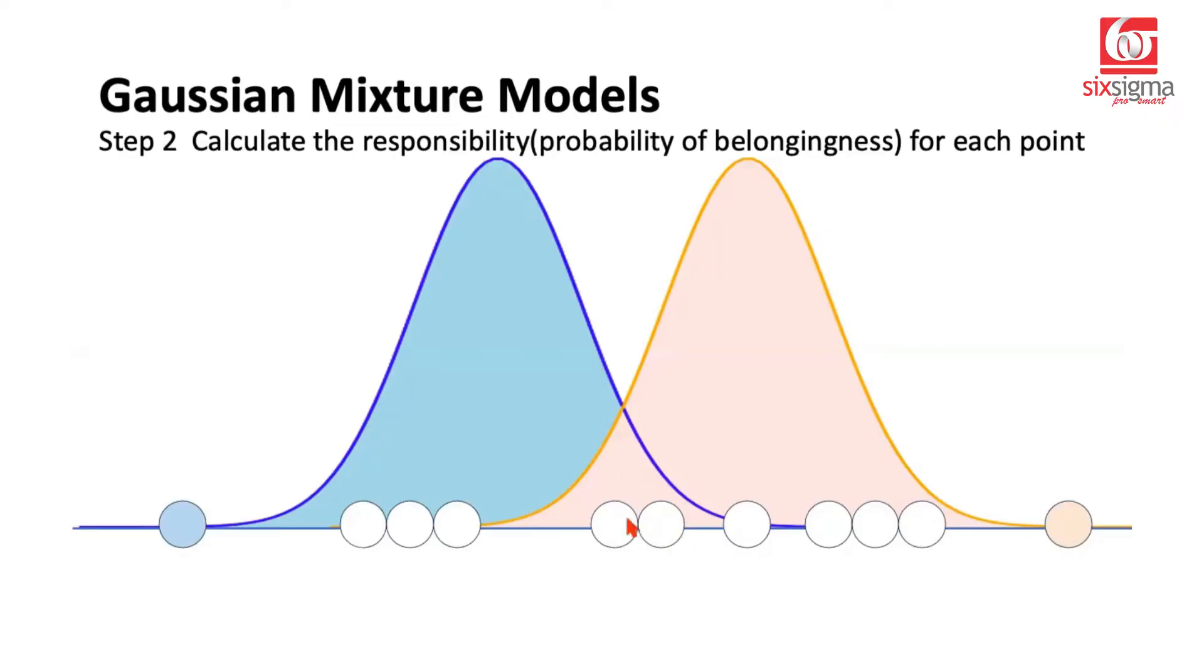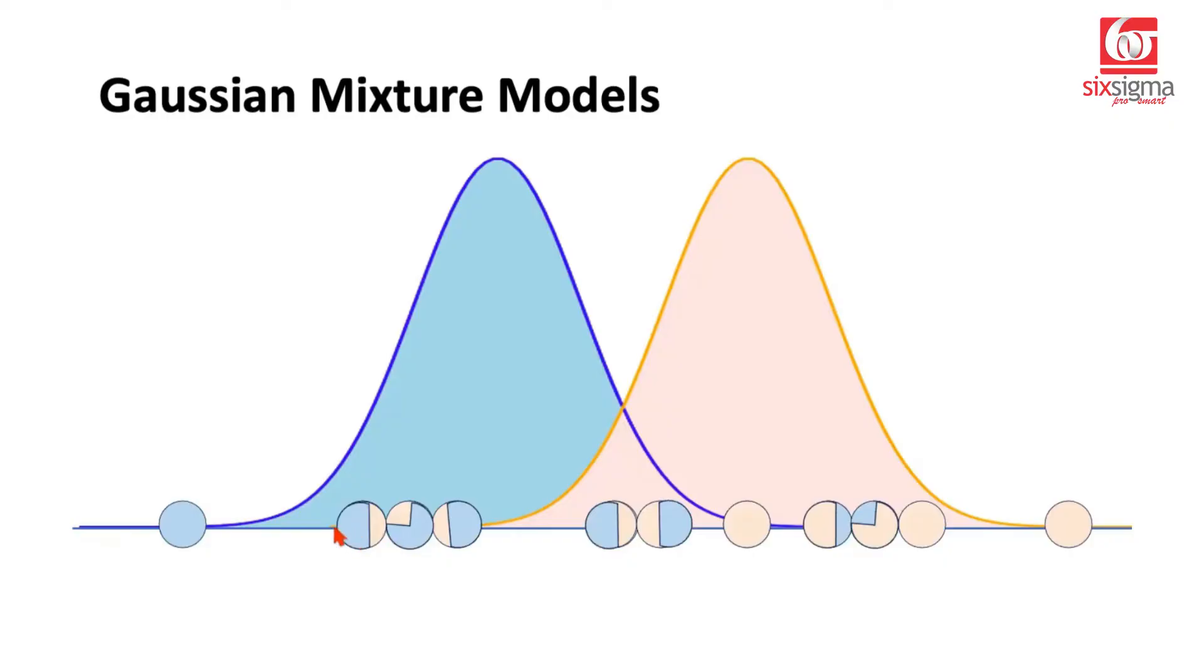For example, here it may be an equal claim from both distributions, whereas the points which are very close to the center, which is the high density region for any distribution, might be more prone to get that color. This color coding is something that you can call as responsibility. So we are saying that this point is more likely to be a point belonging to the blue distribution. So the probability of this point being from the blue distribution is higher compared to the probability that this point belongs to the orange distribution.